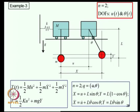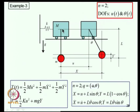Another example: a disc rolling on a platform that itself moves on a horizontal surface. At some time T, the mass has moved and the pendulum has swung to angle θ. Assuming an inextensible chord, there are only 2 degrees of freedom: the position of the mass U and the angle θ.